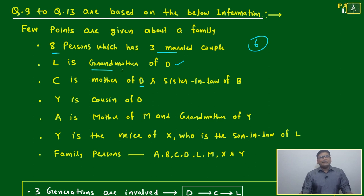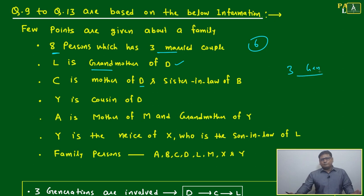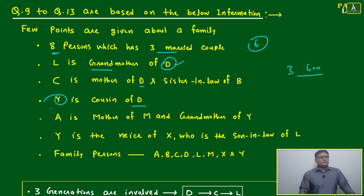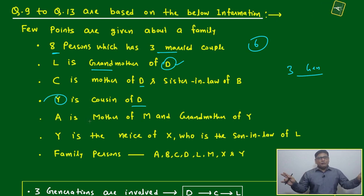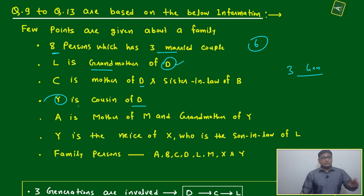L and D are related as grandmother, meaning we are dealing with three generations — that is very clear. C is the mother of D and sister-in-law of B. Y is the cousin of D — just mind it — meaning two different branches: one with a son and one with a daughter. Y is the cousin of D.